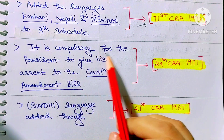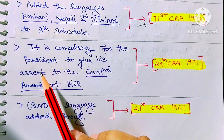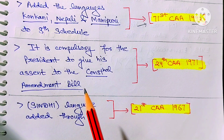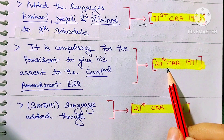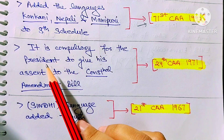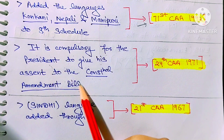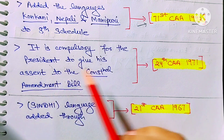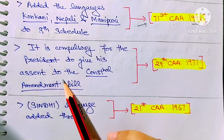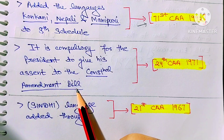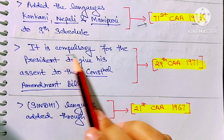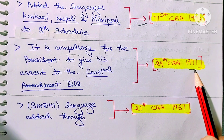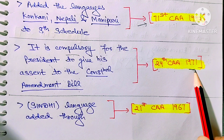Next: it is compulsory for the President to give assent to a Constitution Amendment Bill. This was made compulsory through the 24th Amendment Act 1971. The President must give their approval to any Constitution Amendment Bill under this act.